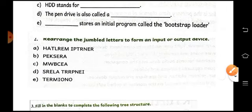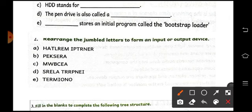So let's do the second part. Rearrange the jumbled letters to form an input or output device. So number one is thermal printer children. It is a thermal printer.